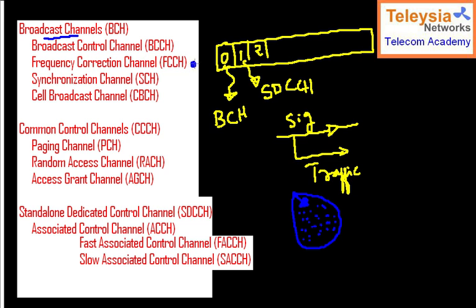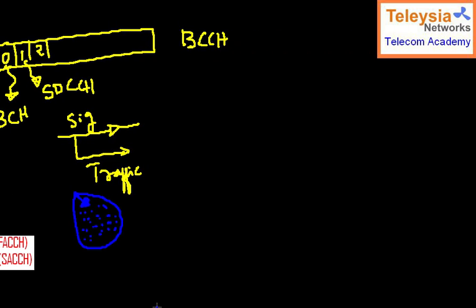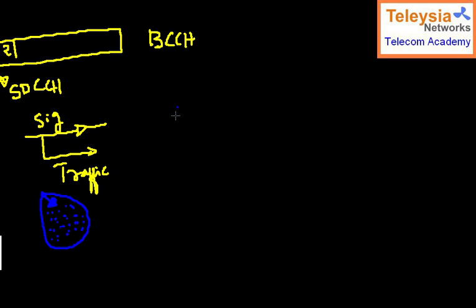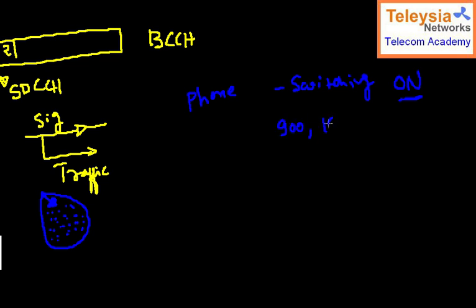The first is the Frequency Correction Channel (FCCH). When you switch on your phone, it has no idea where you are or what frequencies are coming. Let's say you bring a SIM card from an operator and switch on your phone. Depending on your phone capability, it may support 900 MHz, 1800 MHz, 1900 MHz, or 3G.